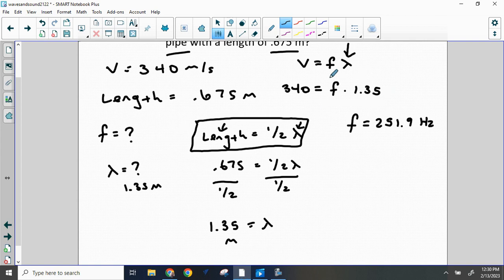Then we went back up to the top here and we filled in our wavelength. We did algebra. We divided both sides by 1.35. That went away. 340 divided by 1.35 was 251.9 hertz.